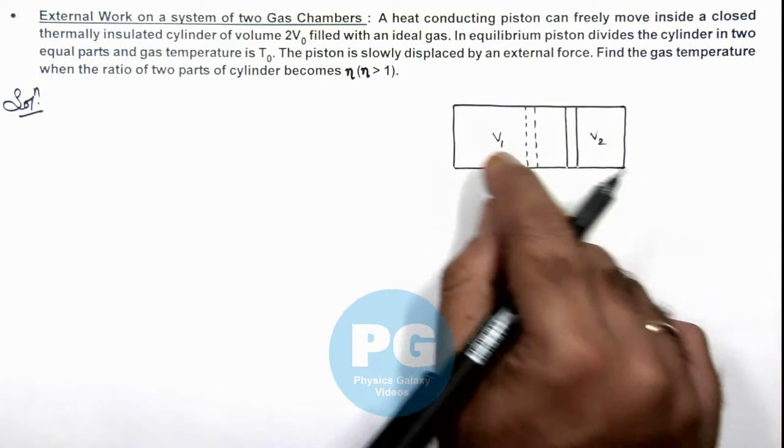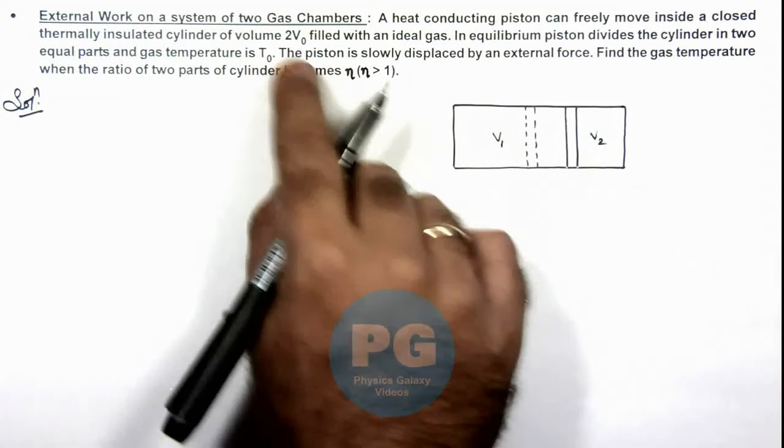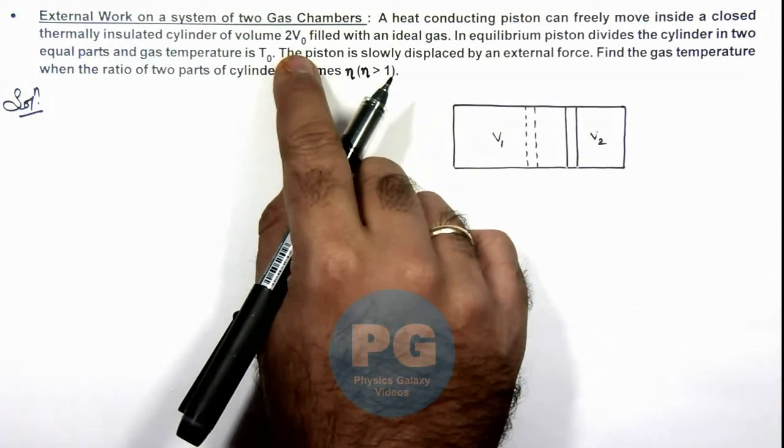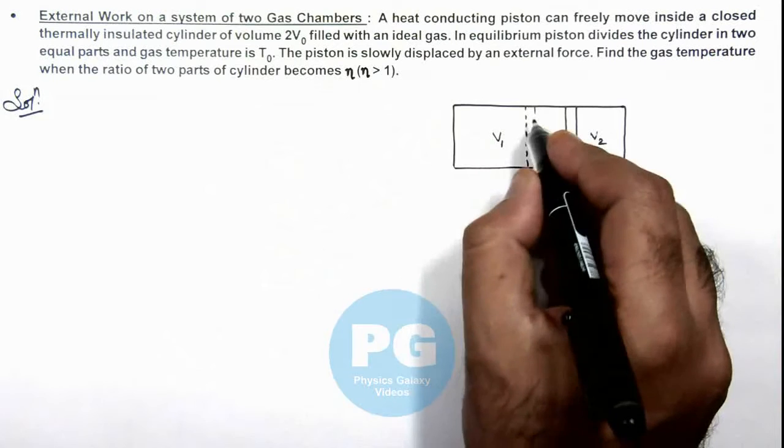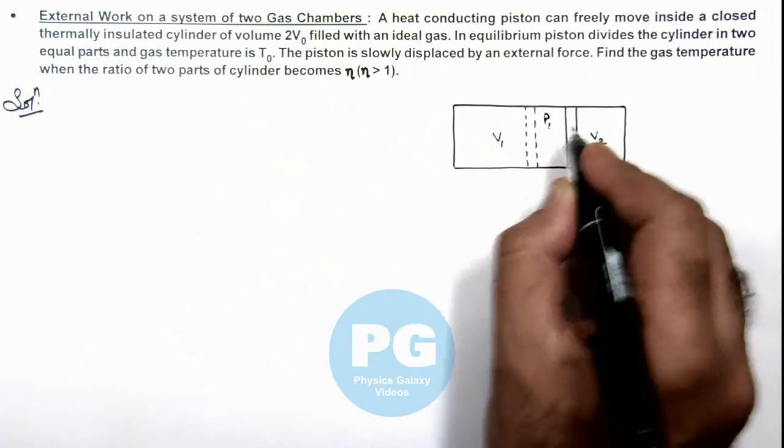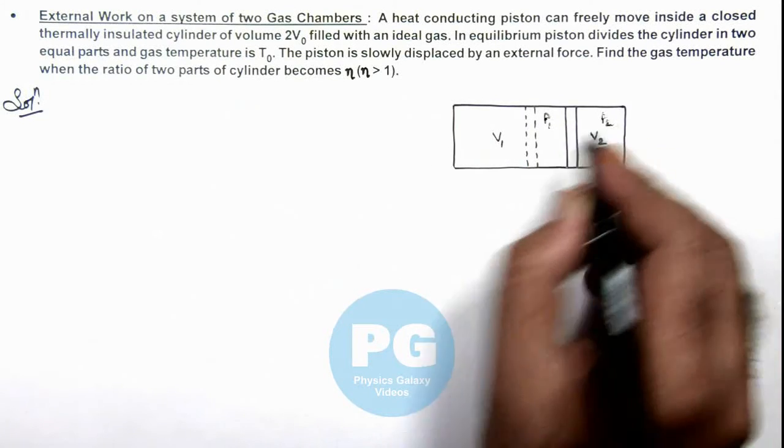Then V₁ plus V₂ we can consider as 2V₀, which is already given to us. And here, say if we consider pressure in left part is P₁ and on right part is P₂.